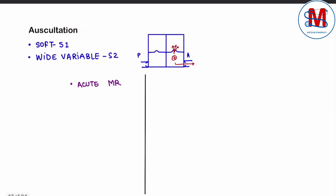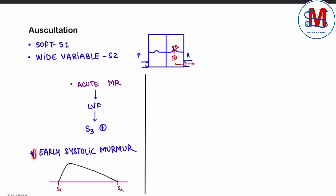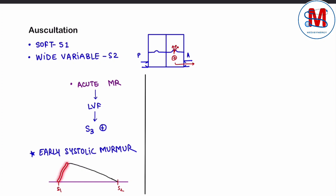Usi ke baad, left ventricle failure hogi. Isi current se S3 present ho sakti hai, jis mein early systolic murmur sunne ko milaigi. S1 aur S2 ke beech ke gap mein early systolic — yani S1 ke just thodi der baad hi murmur ka peak dekhne ko milaiga, phir downfall. Isi tarah ka presentation hum dekhenge.